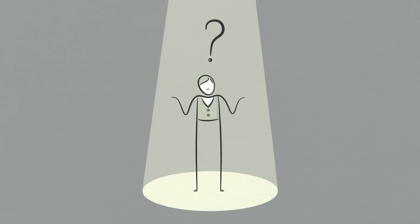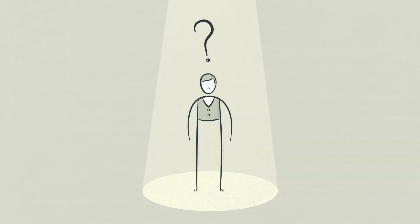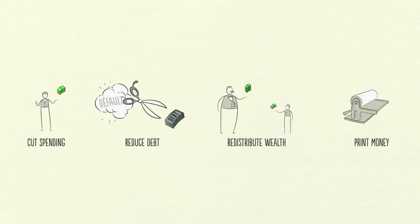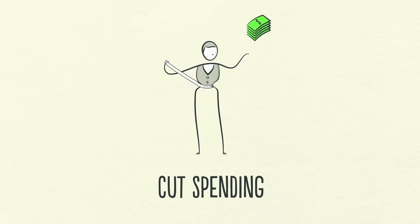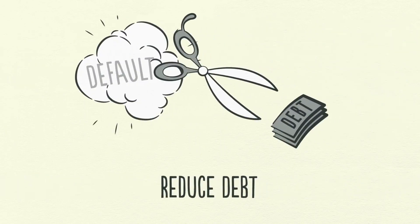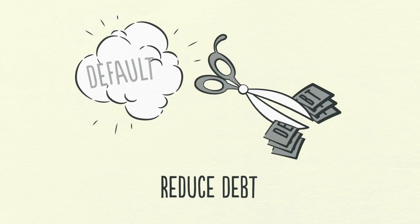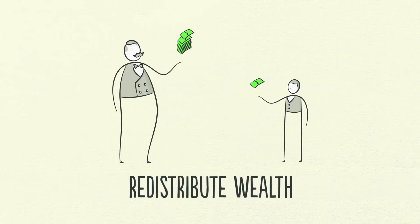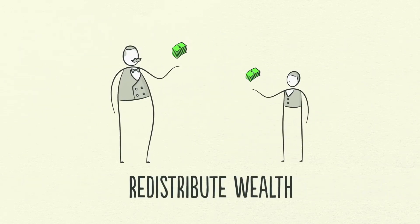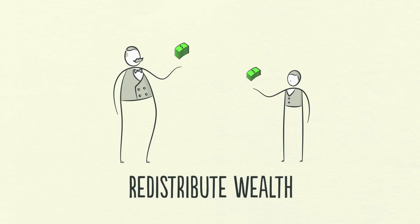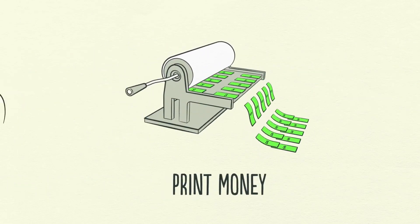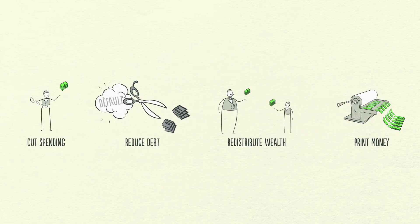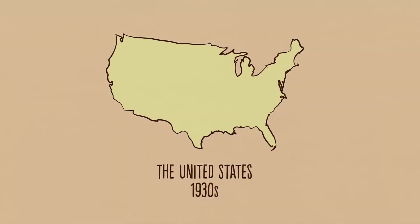The problem is debt burdens are too high and they must come down. There are four ways this can happen. One, people, businesses and governments cut their spending. Two, debts are reduced through defaults and restructurings. Three, wealth is redistributed from the haves to the have-nots. And finally, four, the central bank prints new money. These four ways have happened in every deleveraging in modern history.